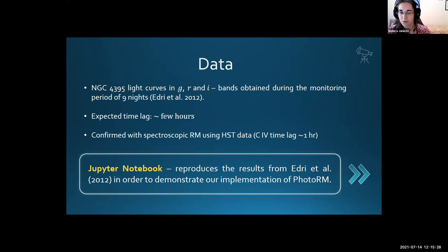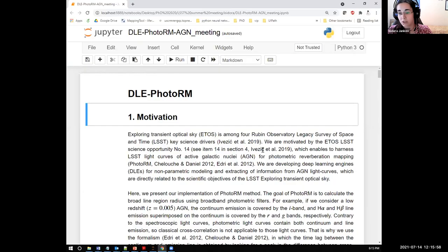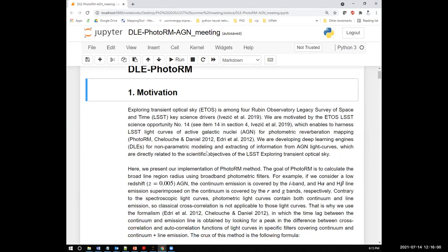The object we will analyze in this demonstration is NGC 4395. It is a low-luminosity Seyfert 1 galaxy with expected time lag of the order of a few hours, as confirmed by spectroscopic reverberation mapping methods using Hubble Space Telescope data. For this demonstration, we use observed photometric light curves from Adri et al. I will briefly present the Jupyter notebook aimed to reproduce the results from Adri.